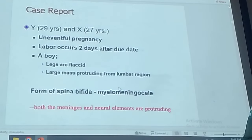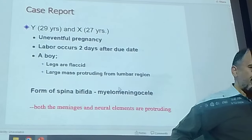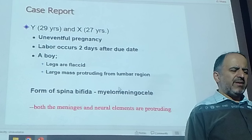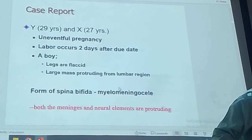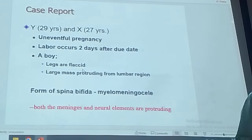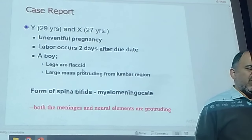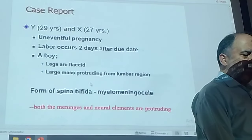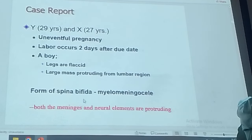Because families are asking you — my mother has this cancer risk, what is my risk? My sister had it, what is my risk? Let's go to a case report. X and Y married, there was no problem in the pregnancy, labour was done, a boy came out with flaccid legs — a floppy baby, meaning hypotonia, no tonicity in the muscles — and a large mass protruding from the lumbar region. We say spina bifida.